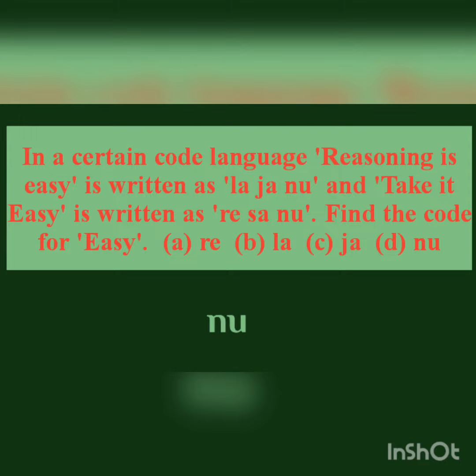In the first sentence, 'reasoning' is coded as L-A, 'is' as J-A, and 'easy' as N-U. In the second sentence, 'take' is coded as R-E, 'it' as S-A, and 'easy' as N-U. Since 'easy' appears in both sentences and is coded as N-U in both, the code for 'easy' is N-U.